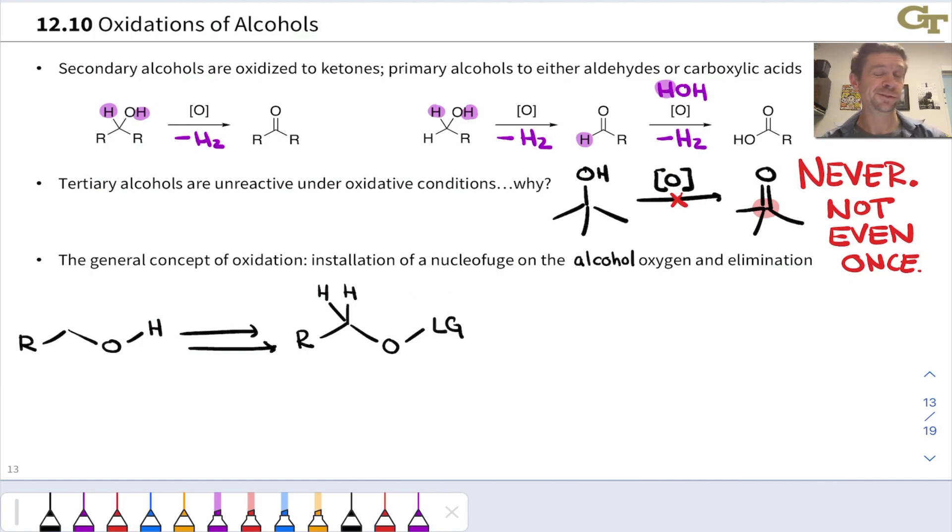This LG group wants to take this pair of electrons with it and get out of town. That's akin to an oxidation in and of itself, taking electrons away from this molecule. At the same time, if we could get this proton to be eliminated and that leaving group to depart, we've established a carbon-carbon double bond, and we've accomplished the desired oxidation.